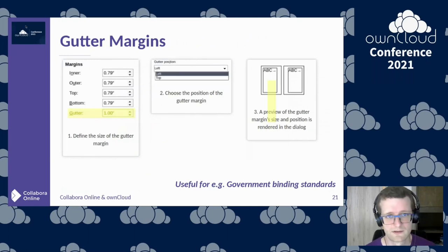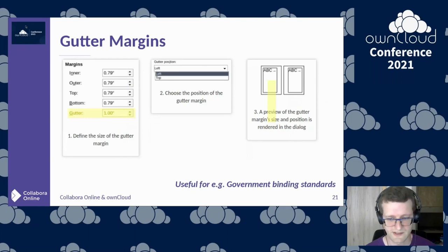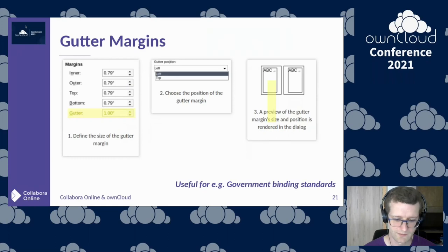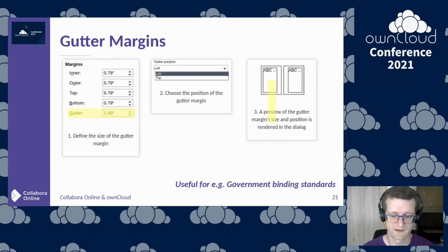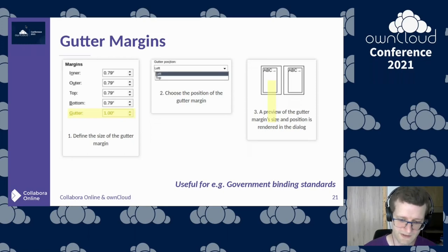We added support for Writer gutter margins, a new functionality in page styles. We were hearing feedback from government customers that some government templates really use this. It's some additional vertical space on the left or right side of the pages. For Europeans this is typically on the left side. If you later print and bind the document, you can decide exactly how much space the binding will consume — that's the gutter margin. We also updated the user interface for this, so when editing Writer page styles the preview widget shows how the body text will be laid out, including the gutter margin.